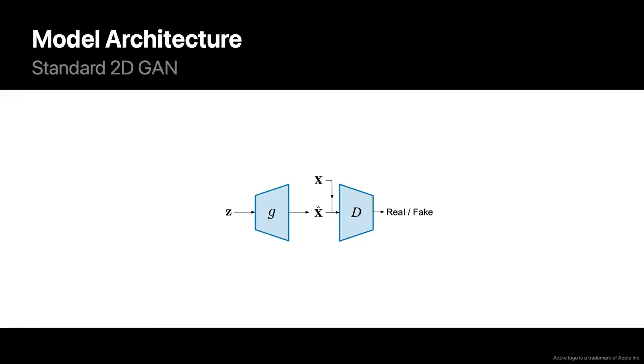Our model follows an adversarial learning framework, where the generator tries to map noise to realistic-looking outputs and the discriminator tries to distinguish between real and fake samples.